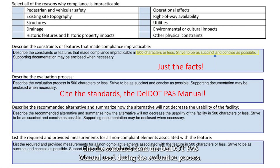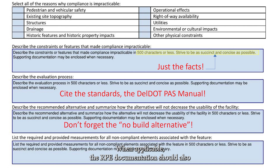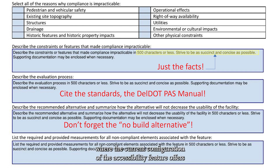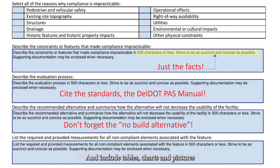Cite the standards from the DELDOT PASS Manual used during the evaluation process. When applicable, the RPE documentation should also provide consideration for a no-build alternative. A no-build alternative may be appropriate where the current configuration of the accessibility feature offers the maximum amount of usability given the site's constraints, and include tables, charts, and pictures to support the request.